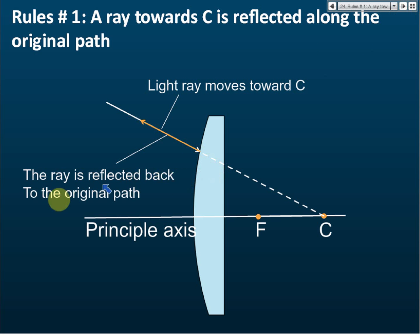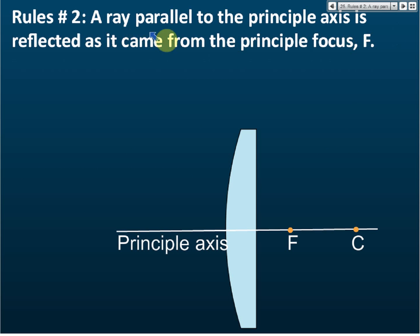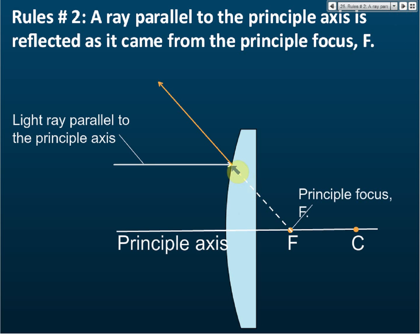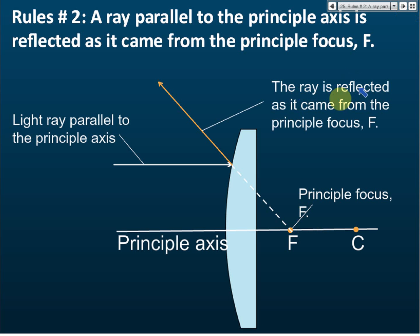That is rule number one. Rule number two: a ray parallel to the principal axis is reflected as if it came from the principal focus. So a ray that is parallel to the principal axis will be reflected as though it comes out from the principal focus.